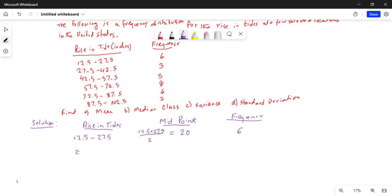For the second class, it's from 27.5 to 42.5. The midpoint is 27.5 plus 42.5 divided by 2, which is 70 divided by 2, answer is 35. What is the difference between these two? 35 minus 20 is 15. Class width is 15. The midpoints are separated by 15 also. This class frequency is 3.